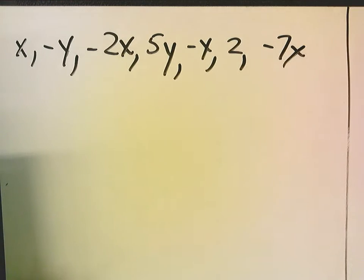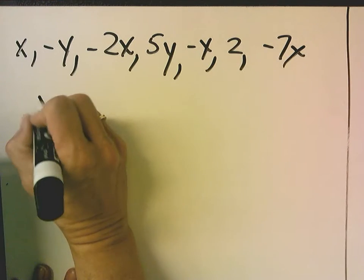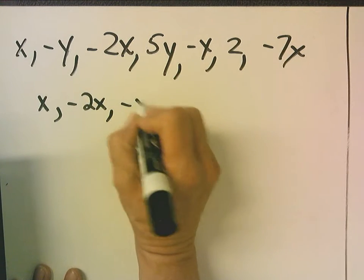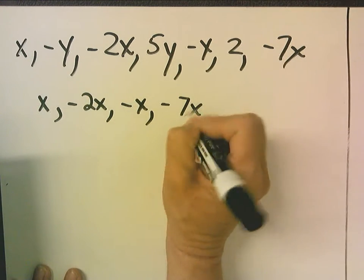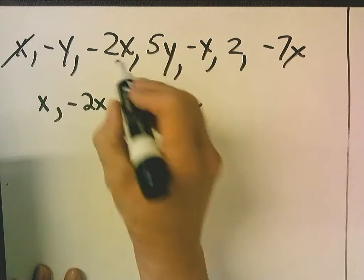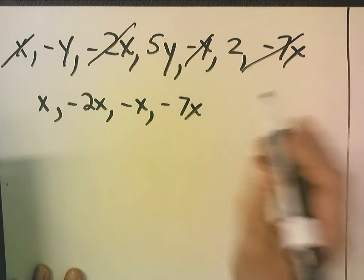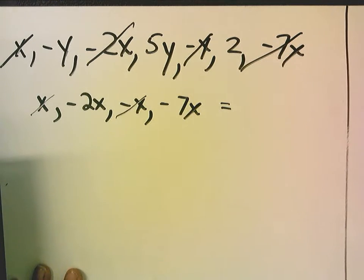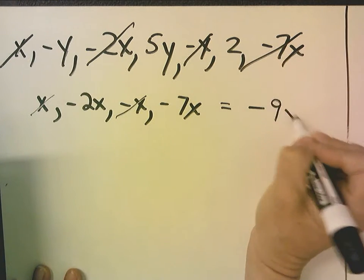Now, I'm going to group my like terms. I have an x, a negative 2x, a negative x, and a negative 7x. We cross out this, this, this, and this. An x and a negative x cancel each other out, and I'm left with a negative 9x.